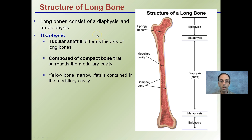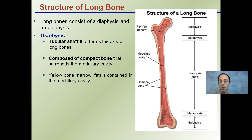Structural long bones consist of a diaphysis and an epiphysis. The diaphysis is a tubular shaft that forms the axis of the long bones — it's the long portion of the long bone. It's composed of compact bone and surrounds the medullary cavity, and yellow bone marrow fat is contained within this cavity. Unless we're talking about a very young individual such as an infant, this medullary cavity would be composed of mostly red bone marrow. But as we age, that red bone marrow becomes replaced with yellow bone marrow, which is mostly fat.